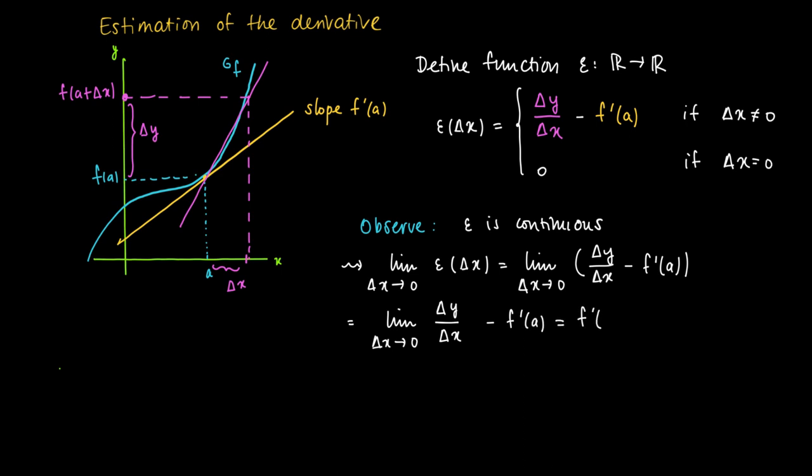But notice that the limit of Δx going to 0 of Δy/Δx equals the derivative. This is just an alternative way to express the derivative. So we get a derivative at a minus a derivative at a equals 0. But ε(0) was defined as 0.